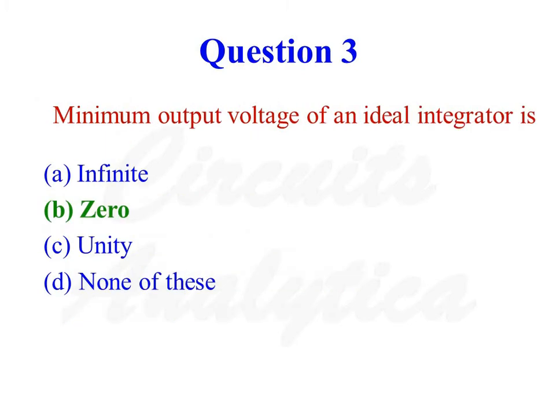The minimum output voltage of an ideal integrator is 0. In an integrator, the output voltage is taken across the capacitor. So at very high frequencies, the capacitor acts as a short circuit and the voltage across the capacitor becomes 0. The correct answer is the second option.